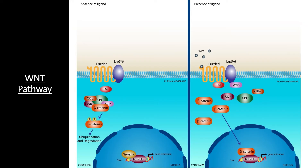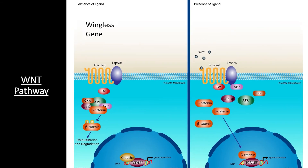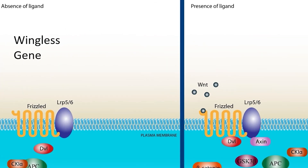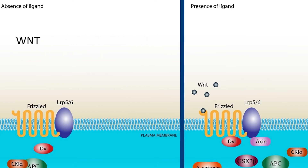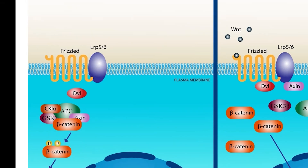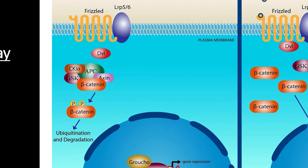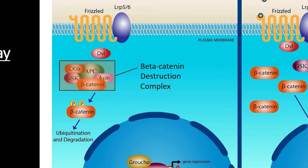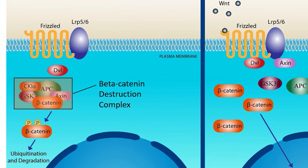One pathway conserved across the entire animal kingdom is the Wnt pathway. The name Wnt combines 'wingless,' a gene mutant first identified in fruit flies, and 'integrated,' a homolog gene found in other animals — both producing the same glycoprotein signal molecule. Without a Wnt signal, beta-catenin — a molecule that can activate gene expression — is continuously broken down by the beta-catenin destruction complex in the cytosol, preventing it from activating any genes.